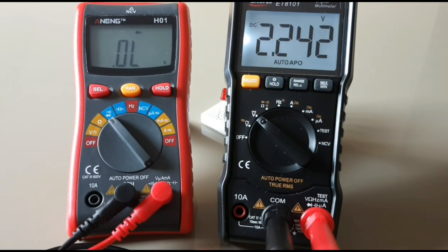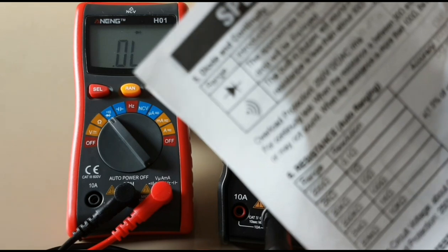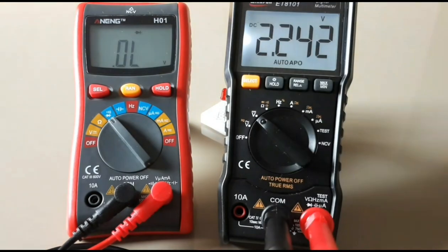Looking now at the ET8101, it is reading the diode voltage coming out of the Anang H01. As you can see we have 2.2 volts, so that is better than the indicated 1.5 in the instruction manual.